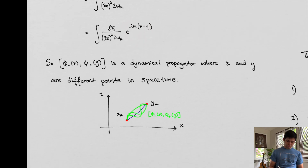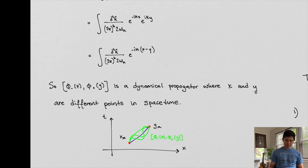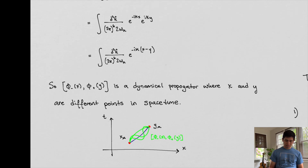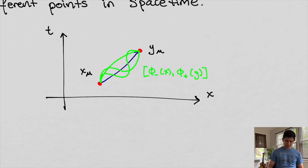This commutation relationship is a dynamical propagator where x and y are different points in space-time. This is a propagator — this is what we've seen before. We've defined this to be the propagator in an earlier video. The reason we call it a propagator is because it relates two points in space-time: at point x and point y.